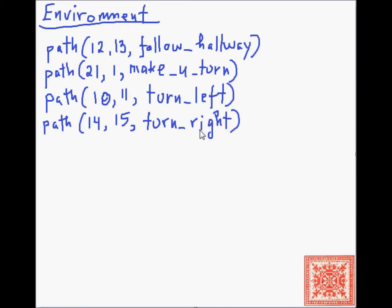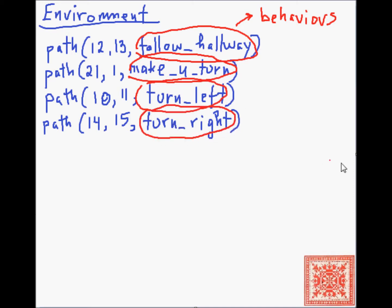Follow hallway and make U-turn and turn left are behaviors. And every service robot will have its own idiosyncratic set of behaviors. It depends on its capability, its objectives, what types of things it needs to do in the environment. If it needs to navigate, then these are sensible behaviors for structured indoor environments. Follow hallway, make U-turn, turn left, turn right.